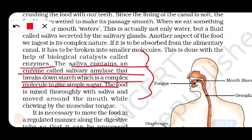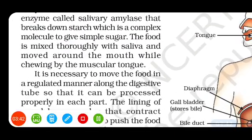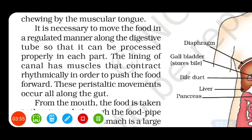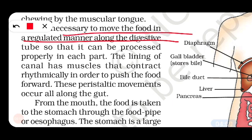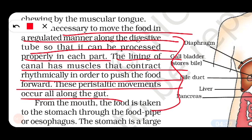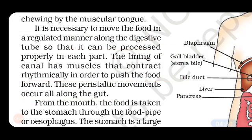The food is mixed thoroughly with saliva and moved around the mouth while chewing by the muscular tongue. It is necessary to move the food in a regulated manner along the digestive tube. The lining of the canal has muscles that contract rhythmically in order to push the food forward. These movements are called peristaltic movements and they occur all along the gut.